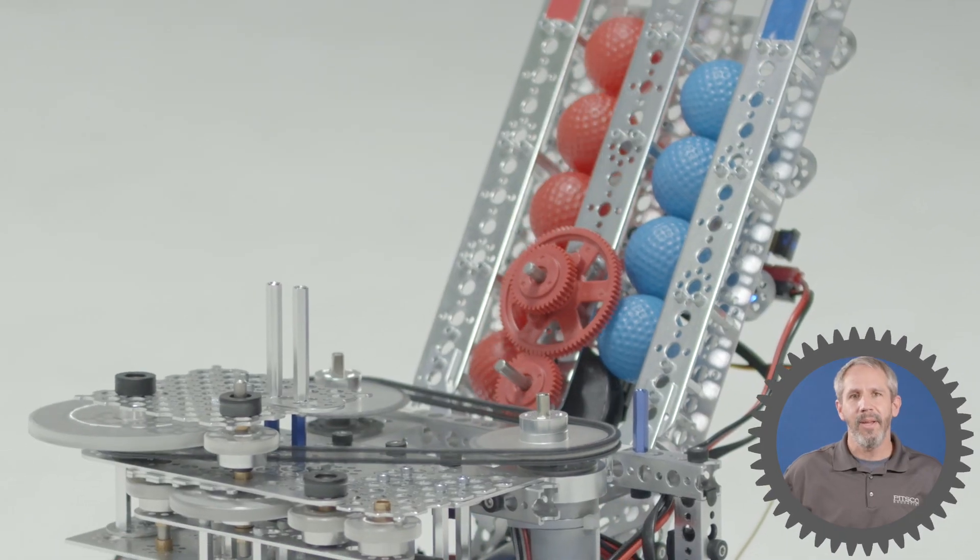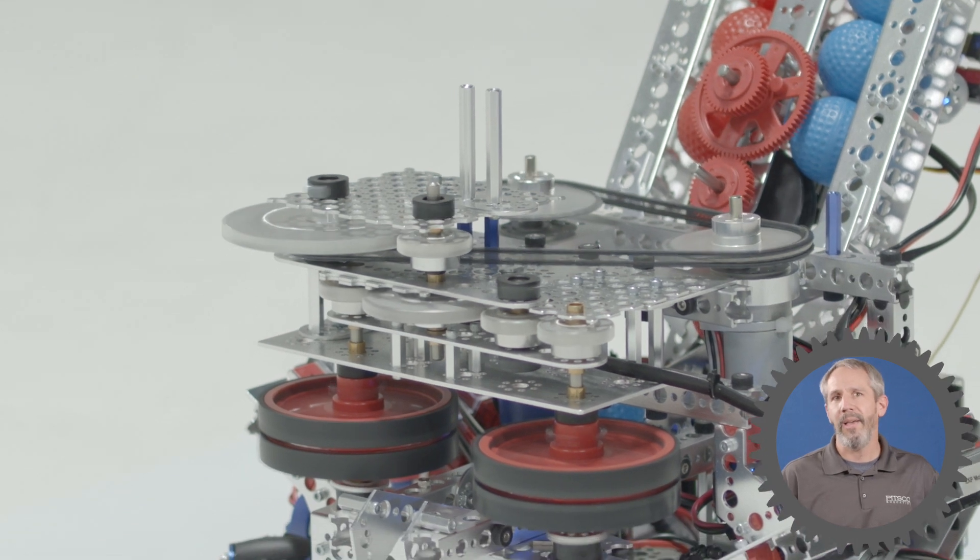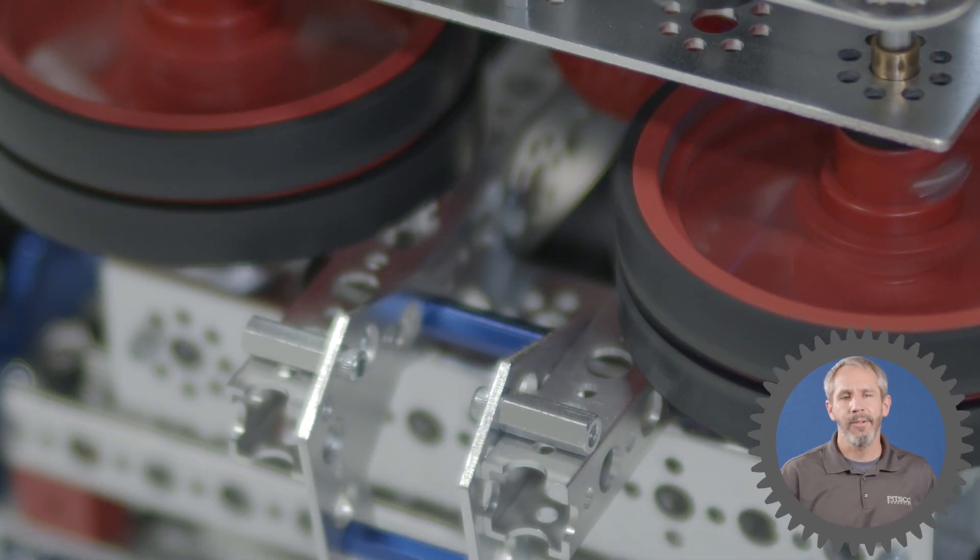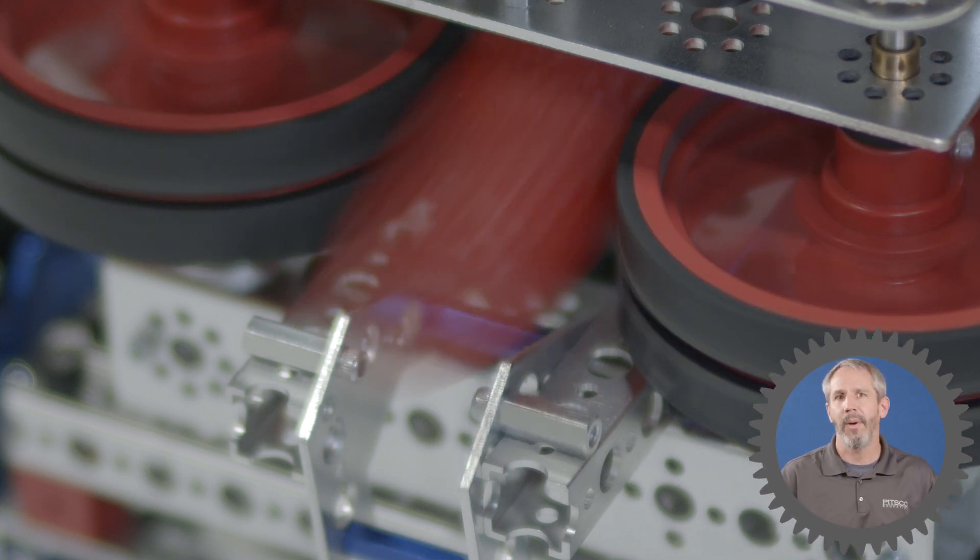As a ball comes down from the hopper through the robot and hits the flywheels, the flywheels spit the ball out the front of the robot where it hits this ramp, and this ramp is what gives the ball its arched trajectory or sometimes called parabolic trajectory.